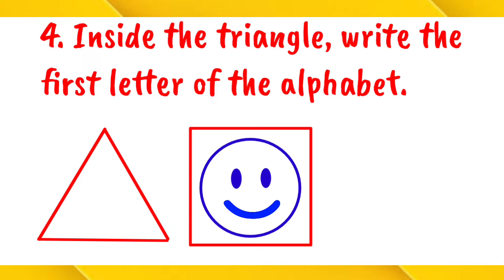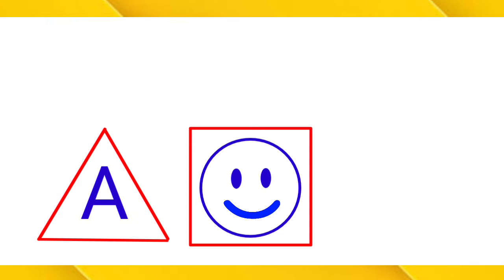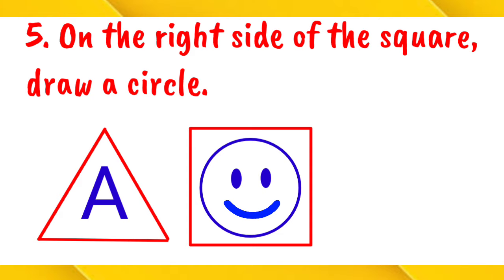Number four, inside the triangle, write the first letter of the alphabet. So, we have to write what letter? Letter A. Okay, number five, on the right side of the square, draw a circle. The right side of the square is this. So, let's do it.